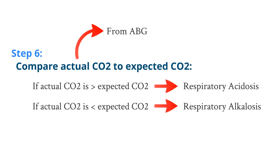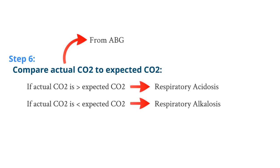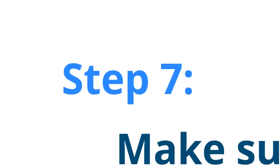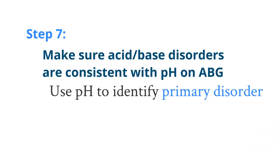Now let's move to step 7. Step 7 brings everything together. Basically, you compare the acid-base disorders you came up with, and make sure they're consistent with the pH on the ABG. Whichever acid-base disorder is consistent with your pH, that is the likely primary disorder. Now that we've gone over these 7 steps, let's try to do an example just to make the idea more concrete.